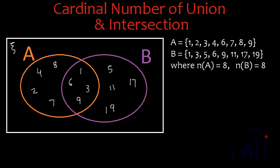In this video we are going to understand the relation between the cardinal numbers of sets and their union and intersection. I have two sets, set A and set B, represented using Venn diagrams.